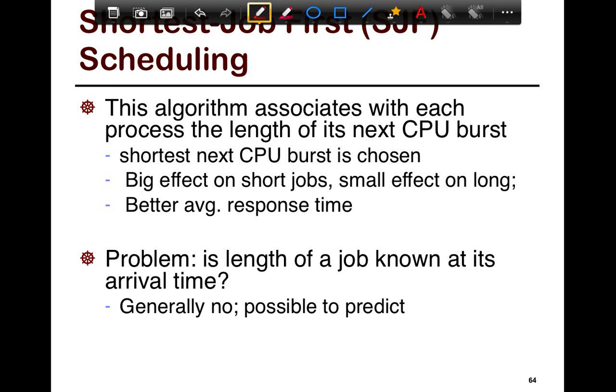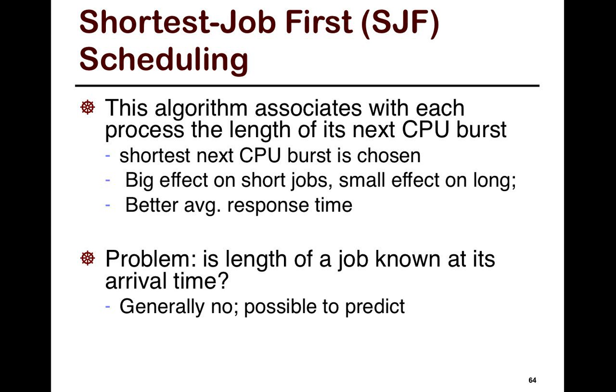The algorithm we're going to look at, which tries to prioritize the shortest job, there are two of them. The first one we look at is shortest job first scheduling. This algorithm associates with each process the length of its next CPU burst. So in a sense, if you know how long a job is going to run, the shortest next CPU burst is chosen.